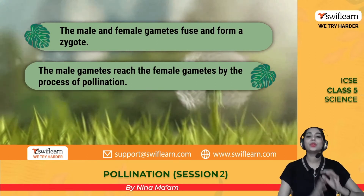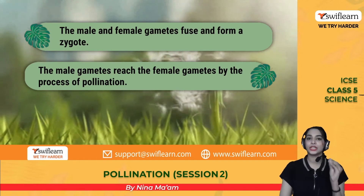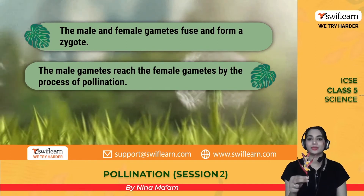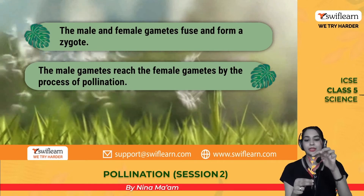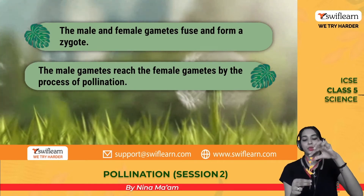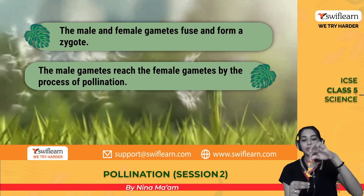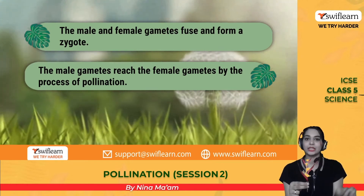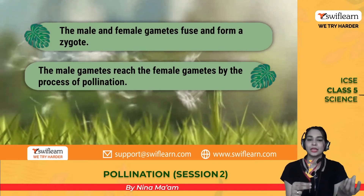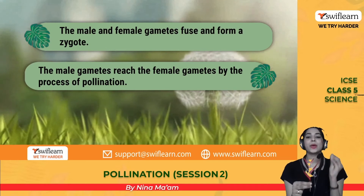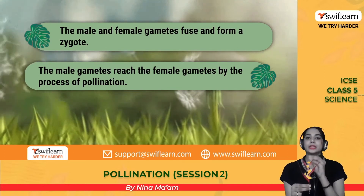These are the anther and the stigma. Pollen grains transfer from the anther and attach to the stigma. That is the process — the transfer of pollen grains from the male gamete, which is the anther, to the stigma.